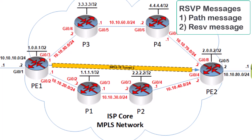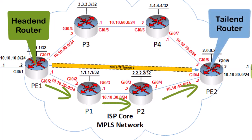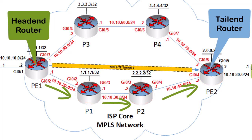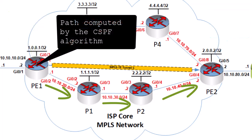Arguably the most important messages sent by this protocol are the path message and the reservation message. The path message is generated by the head end router and is sent to the tail end router. Its purpose is to request the reservation of resources from every router along the path. The reserved values are those configured in the parameters of the created MPLS TE tunnel interface. The actual path taken by the path message is based on the path computed by the CSPF algorithm within our head end router.